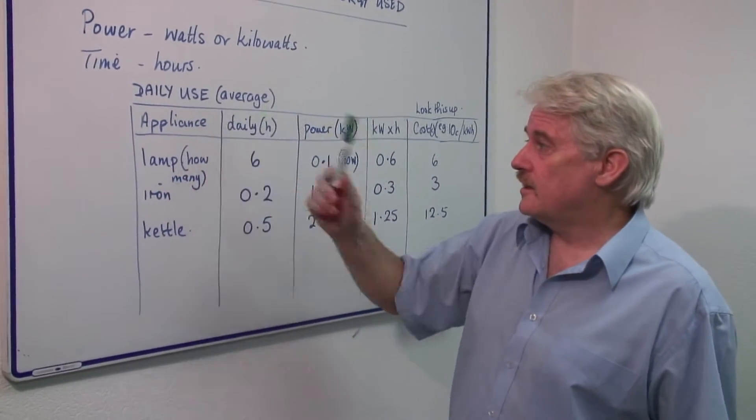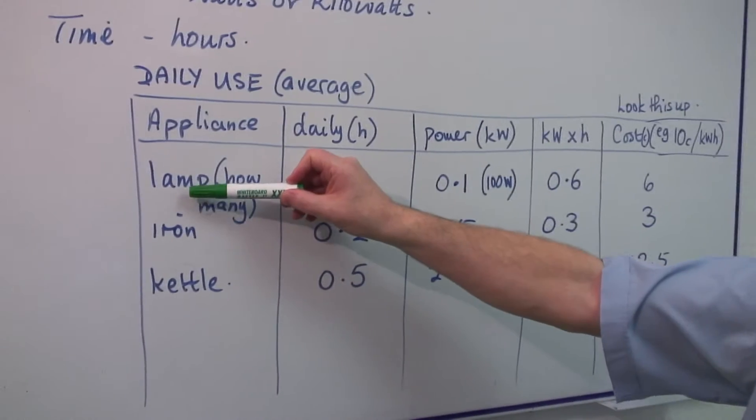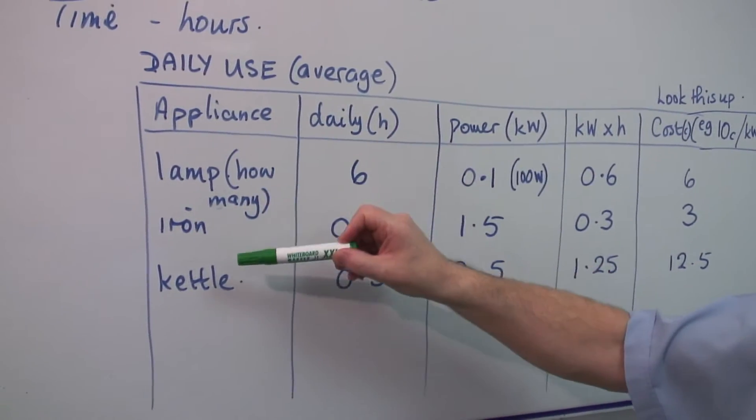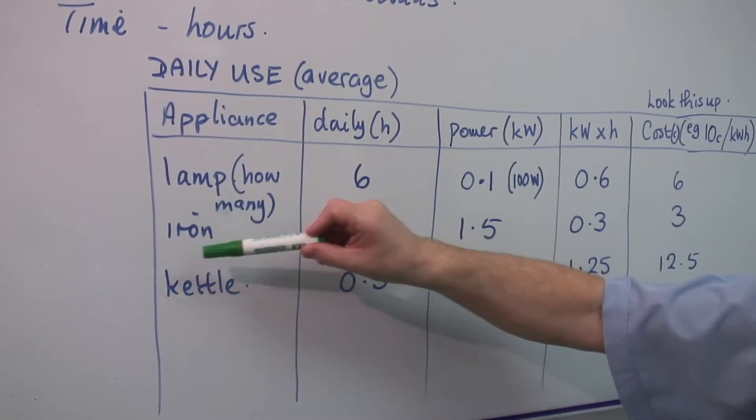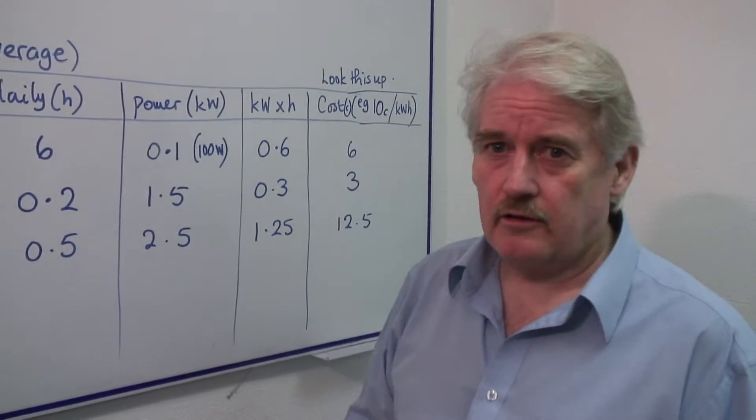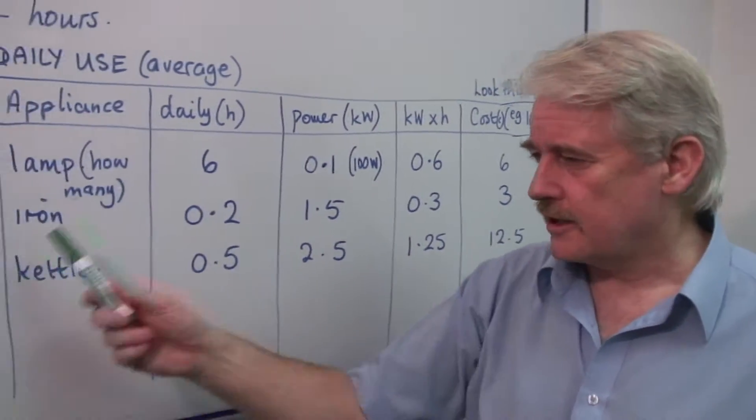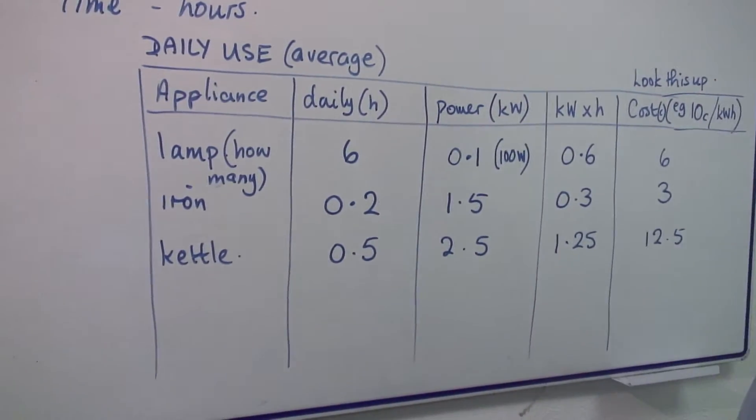First of all I need to know which appliance I'm looking at and here are three typical ones. A lamp of some kind, a light bulb that is, an iron for ironing your clothes, and a kettle for boiling water. If you're in England for making cups of tea and if you're in America for making cups of coffee.